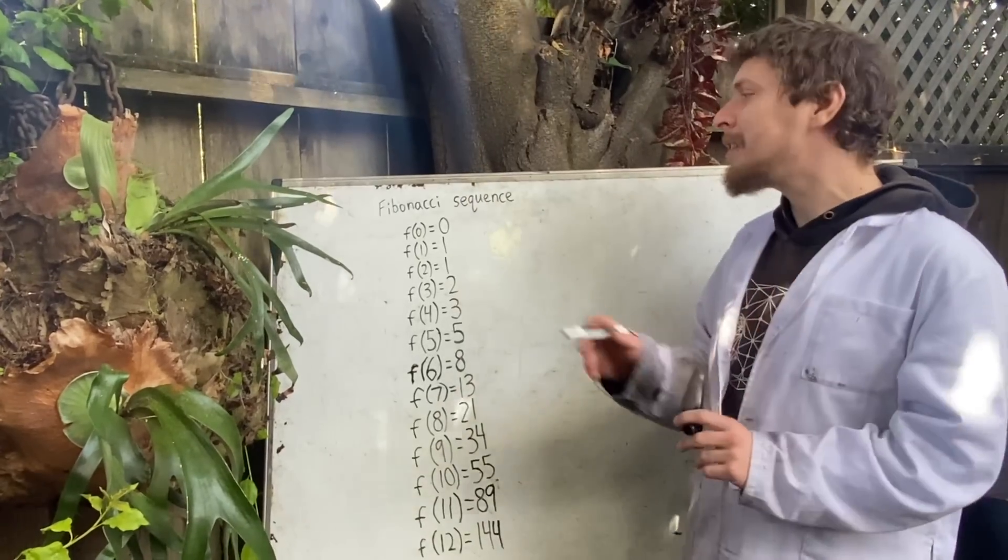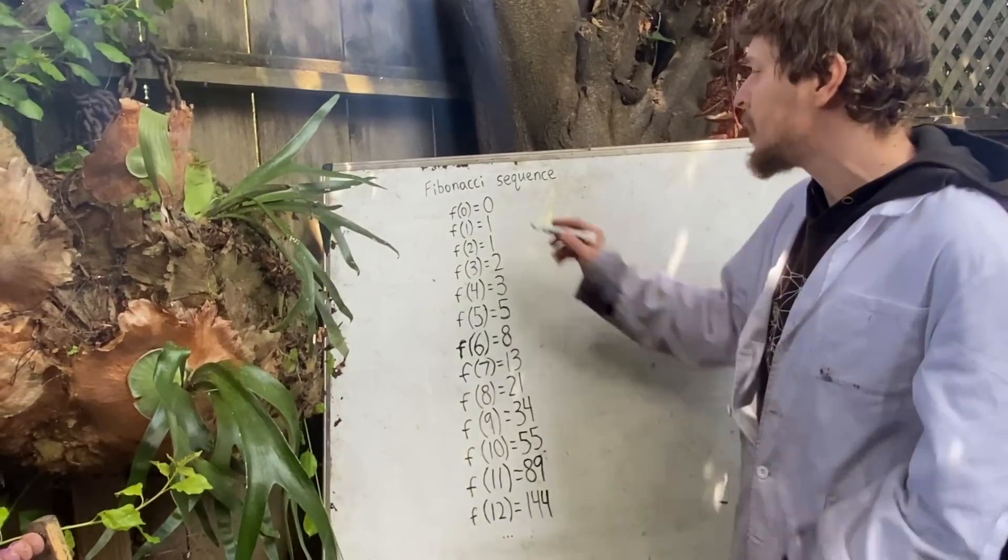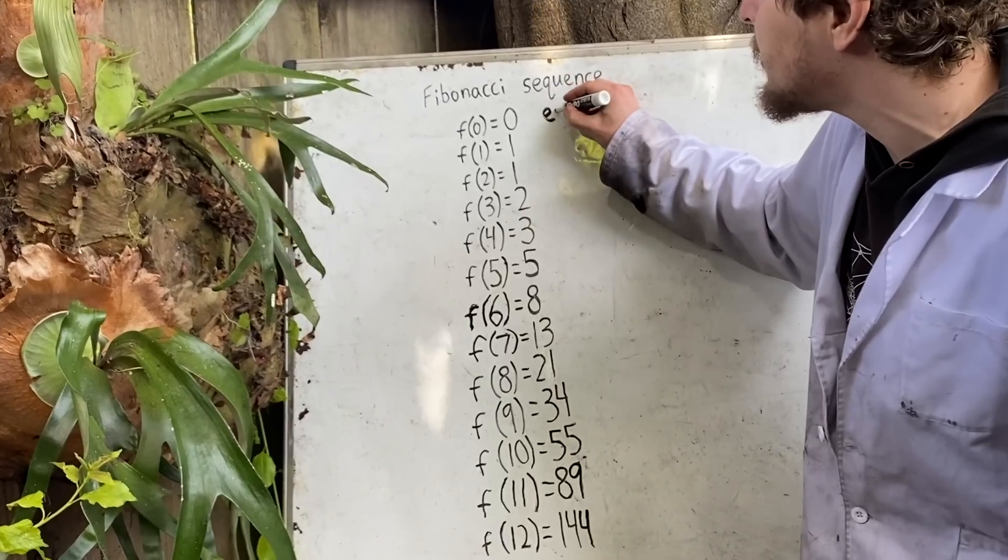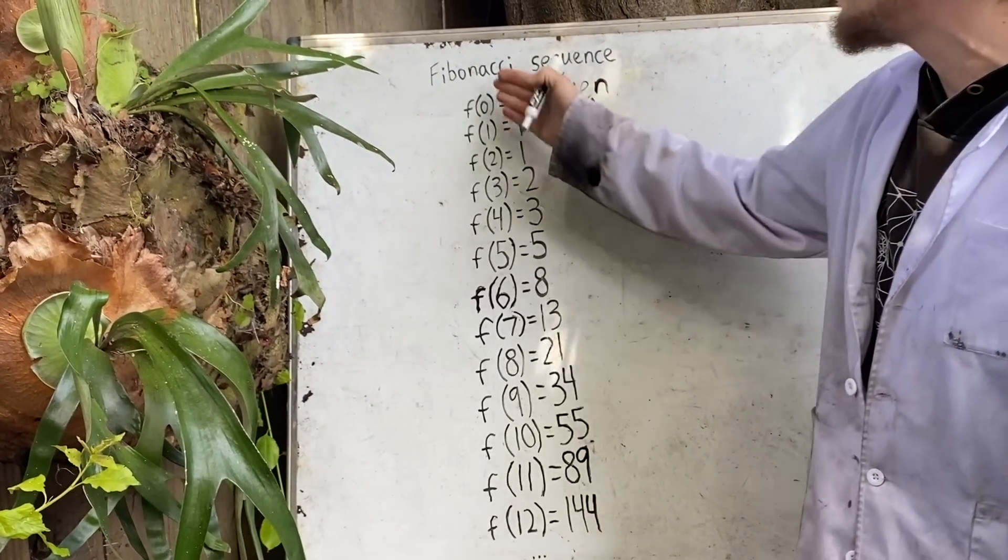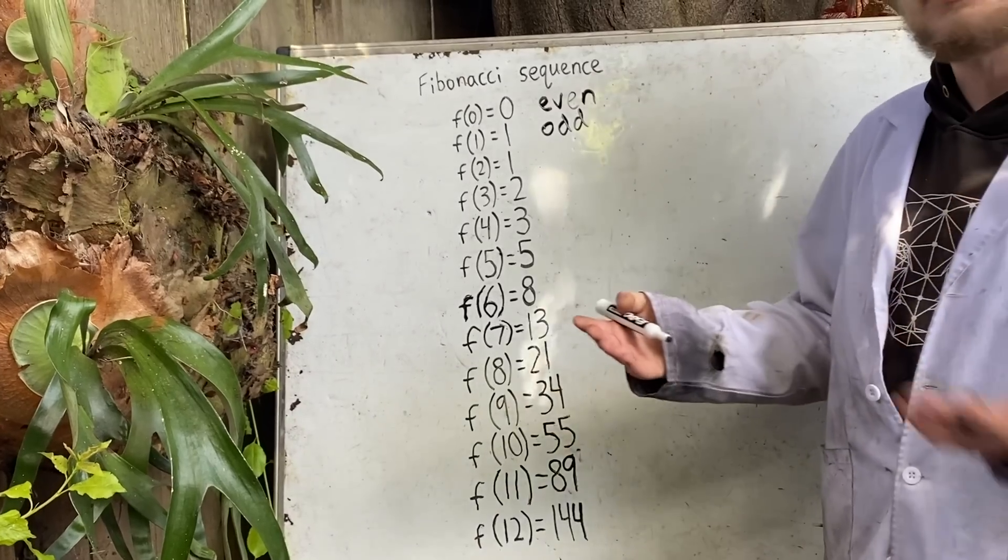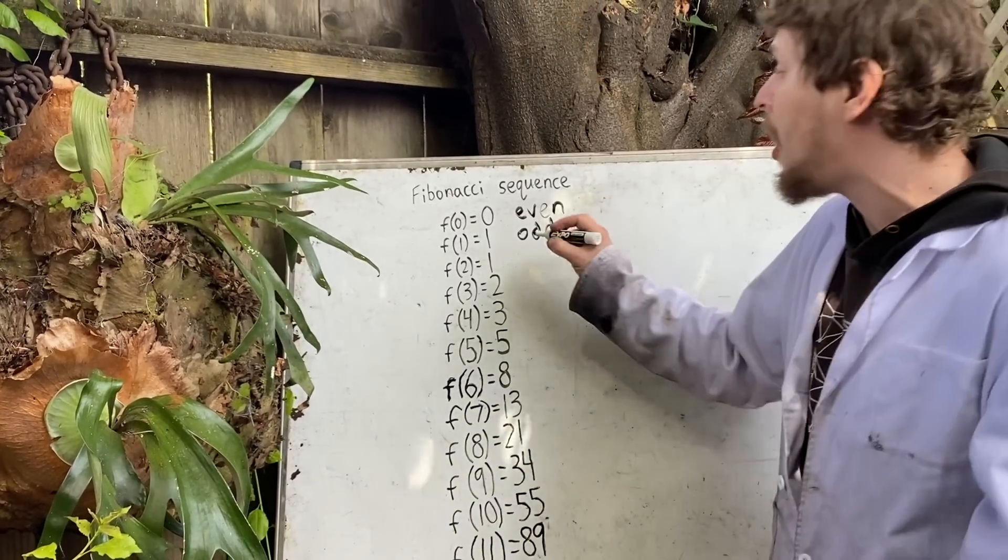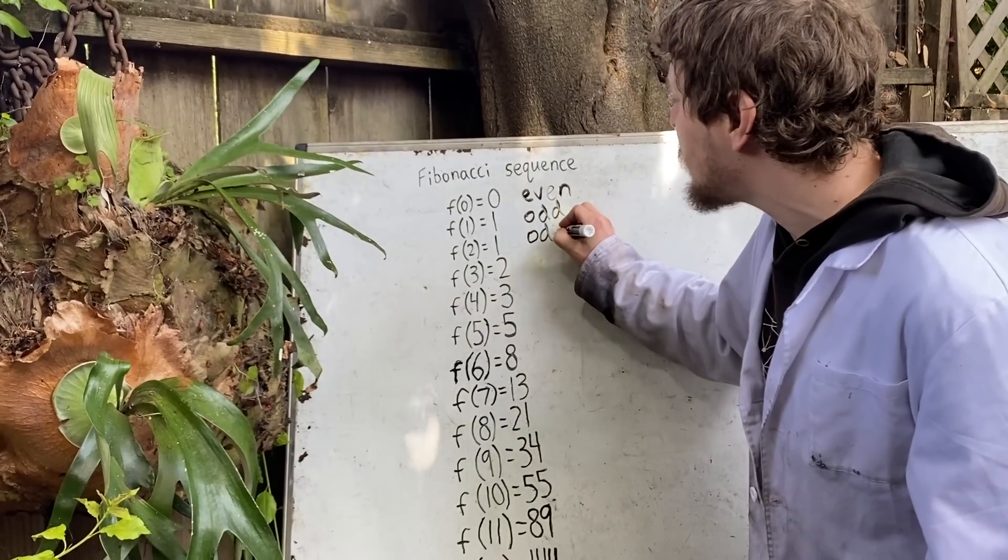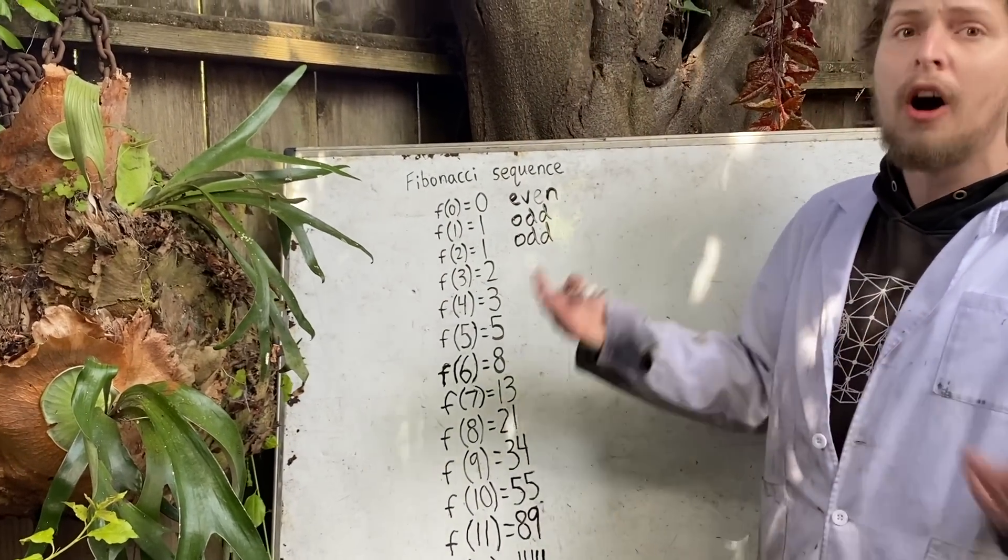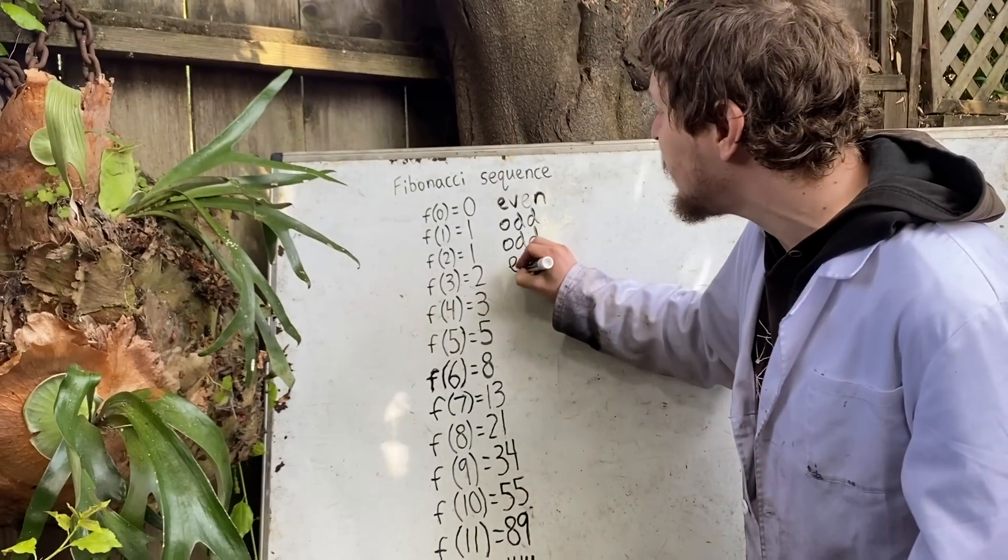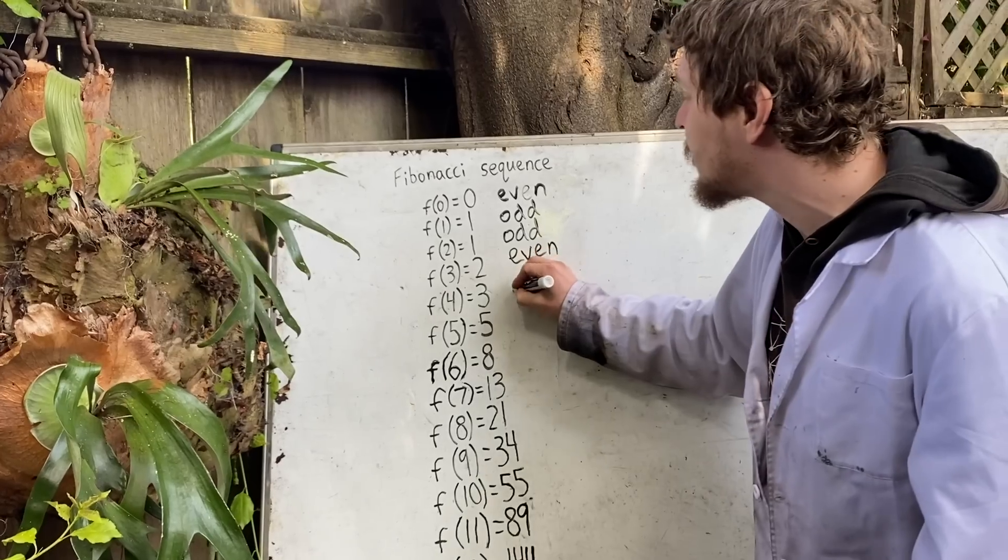Let's start by seeing if the Fibonacci sequence has a pattern in terms of even and odd numbers. It begins with an even zero, and then an odd one. And even without knowing these further numbers, we can note that an even number plus an odd number always generates an odd number. And then the next term, which is determined by adding these two, is an odd plus an odd, which is always an even. Then an odd plus an even is always an odd.